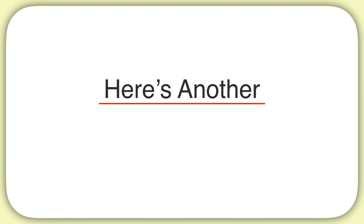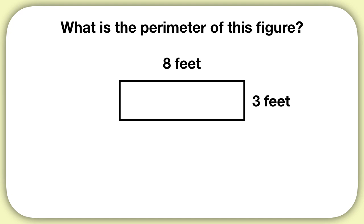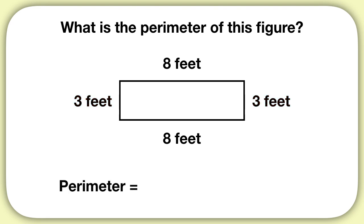Here's another problem to practice with. What is the perimeter of this figure? What equation could I solve to find the perimeter? We know because this side is 8 feet, this side is also 8 feet. And because this shorter side is 3 feet, we can tell this other shorter side will also be 3 feet. So to find the perimeter, we could just add up the side lengths: 8 feet plus 3 feet plus 8 feet plus 3 feet. When you add up those numbers, you get a perimeter of 22 feet.